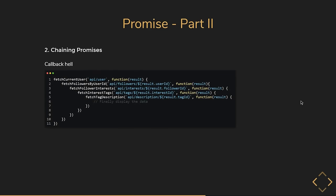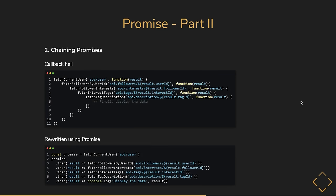The code with callbacks was deeply nested; the same code with promises becomes much more readable and maintainable — it seems almost synchronous. We begin by fetching the current user, then fetch followers, then their interests, then their tags, then the description, and finally display the data. Promises can be chained — this is really important to keep in mind not only from an interview point of view but also for day-to-day work.